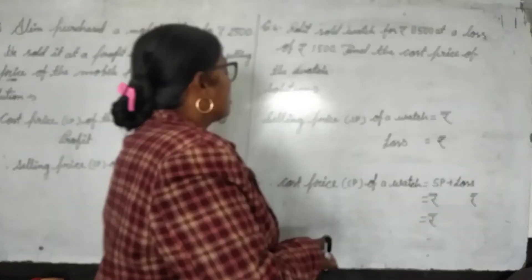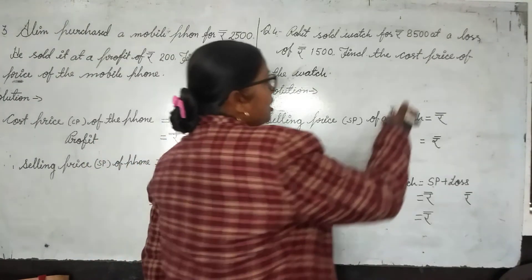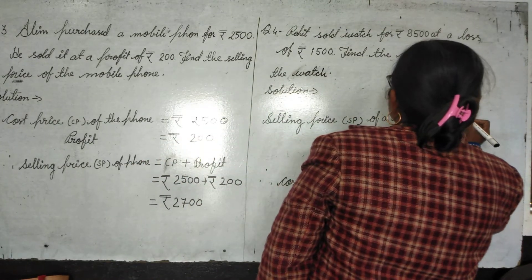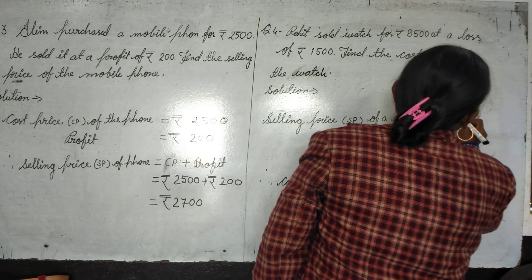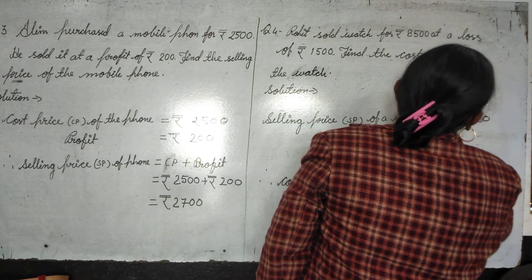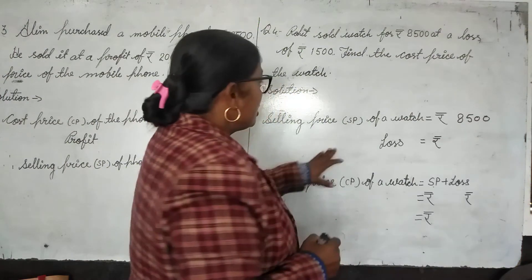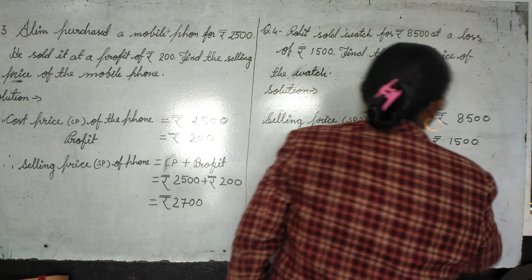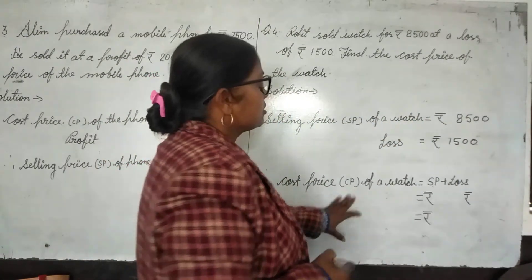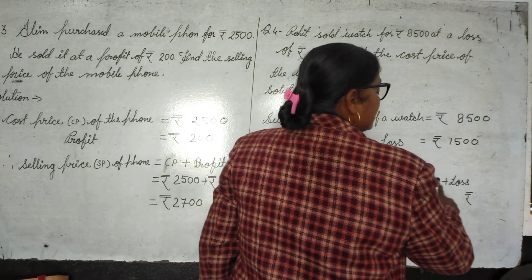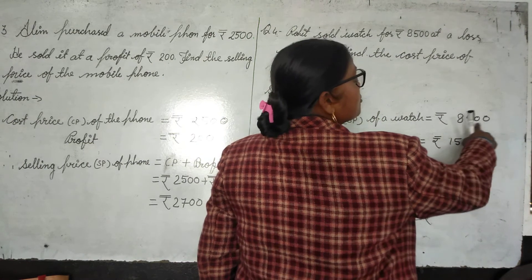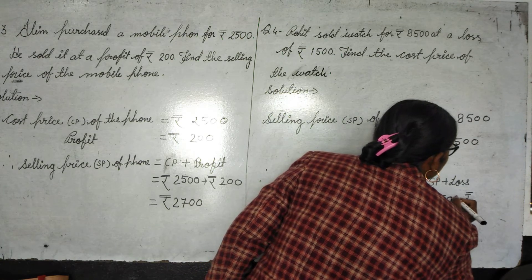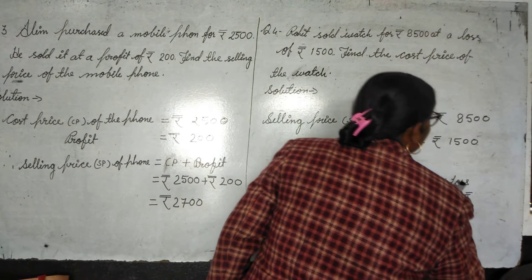So: selling price of watch is 8500, and loss is 1500. Cost price of watch equals selling price plus loss. Selling price is 8500, and loss is 1500.